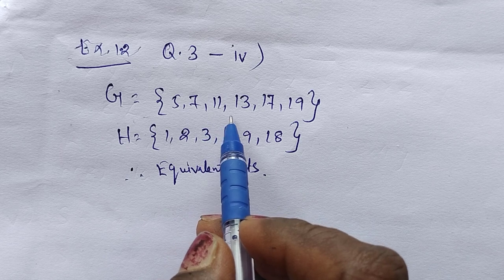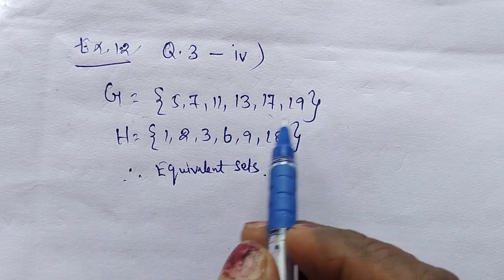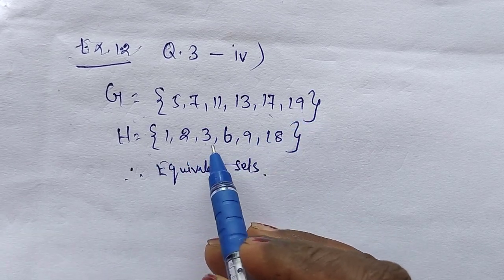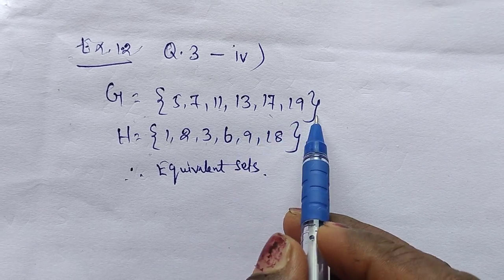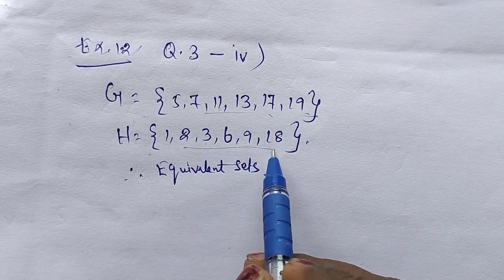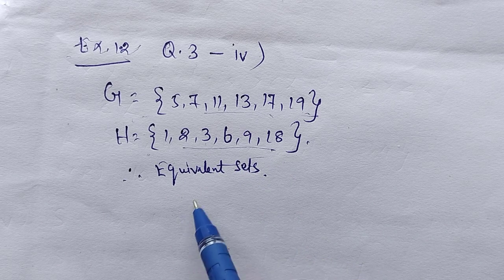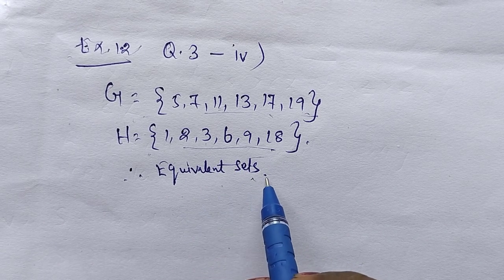G equals 5, 7, 11, 13, 17, 19. H equals 1, 2, 3, 6, 9, 18. Now you can see here six number of elements. There are six number of elements. Therefore, it's an equivalent set.